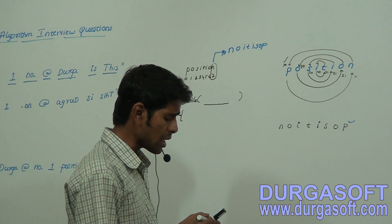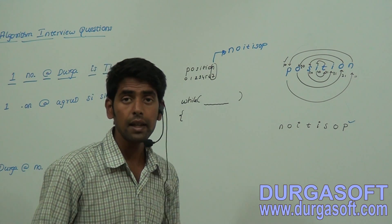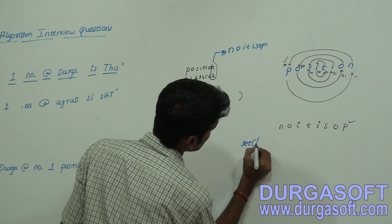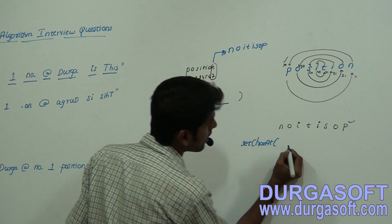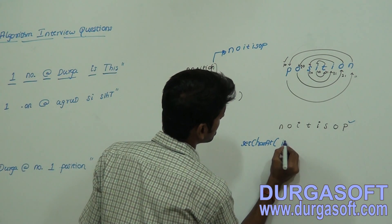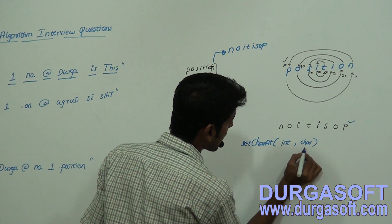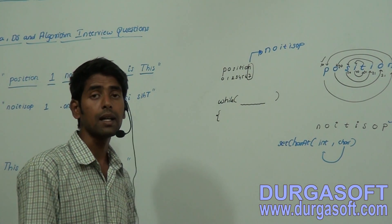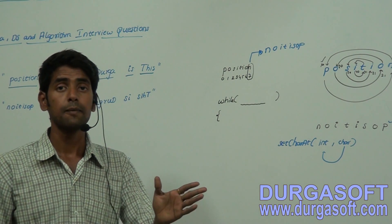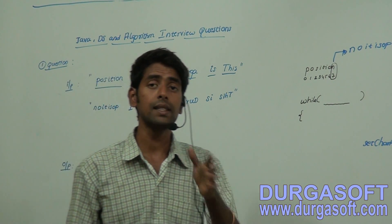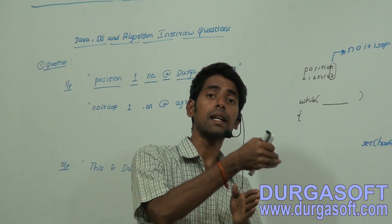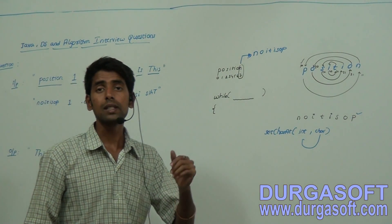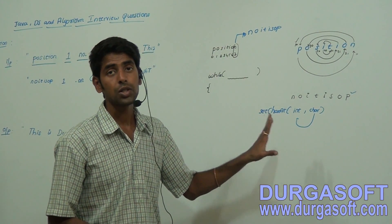StringBuffer has a very useful method: `setCharAt(int index, char c)` — it replaces a particular character at the specified index. You can use String too, but with String, any change in content creates a new object in the heap area and you have to update the reference. That creates unwanted objects in memory, so it's better to go with StringBuffer.